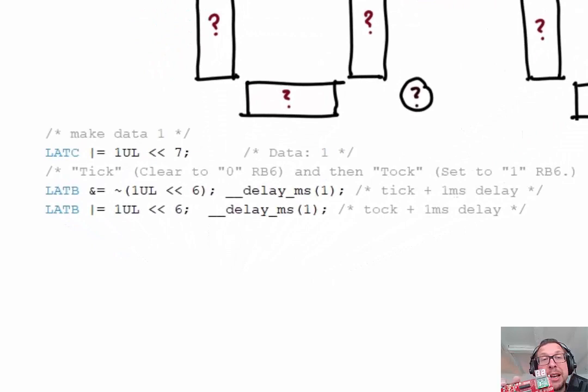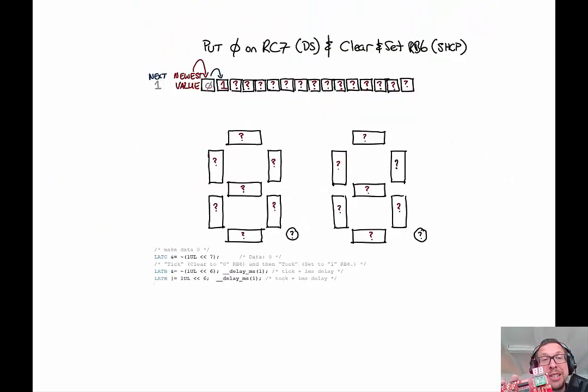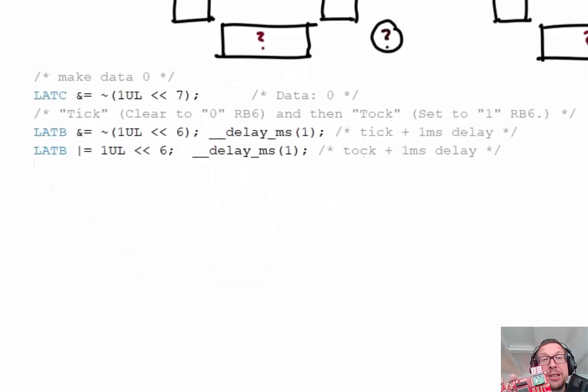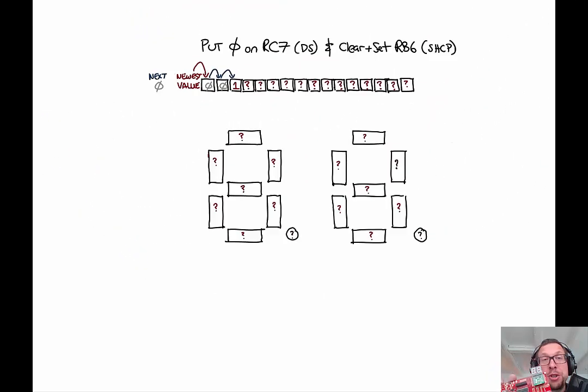The next thing we do is pass in a data value of one using latch C and then tick-tock on the clock on latch B. We do that again for a value of zero on latch C and then tick-tock on latch B as shown here.